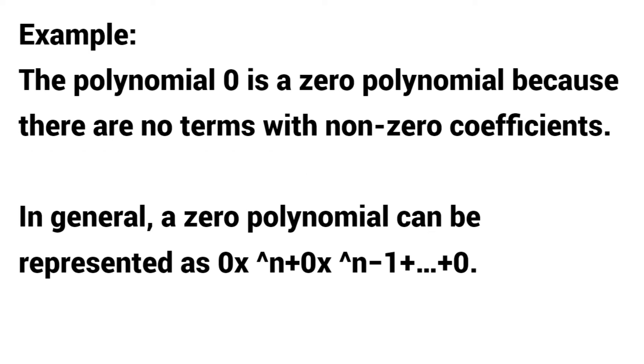Example: The polynomial 0 is a zero polynomial because there are no terms with non-zero coefficients.